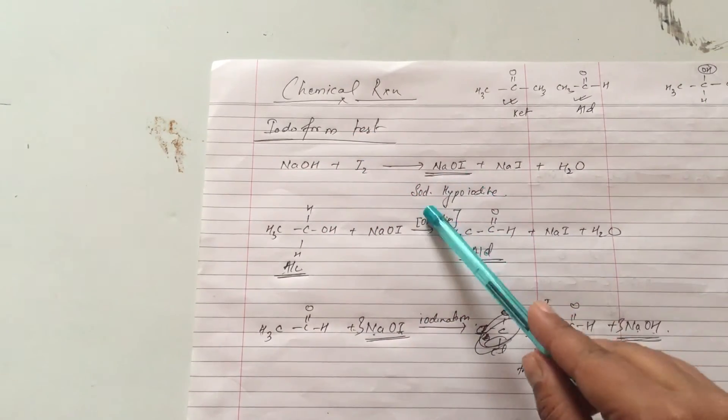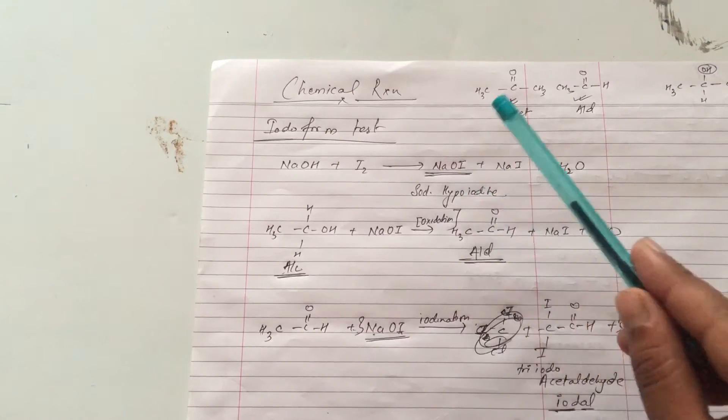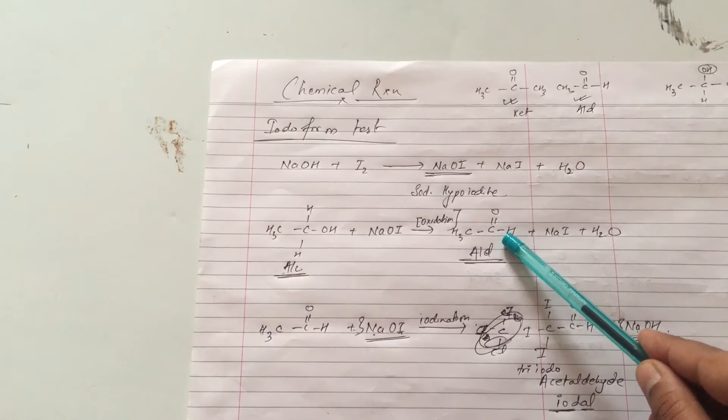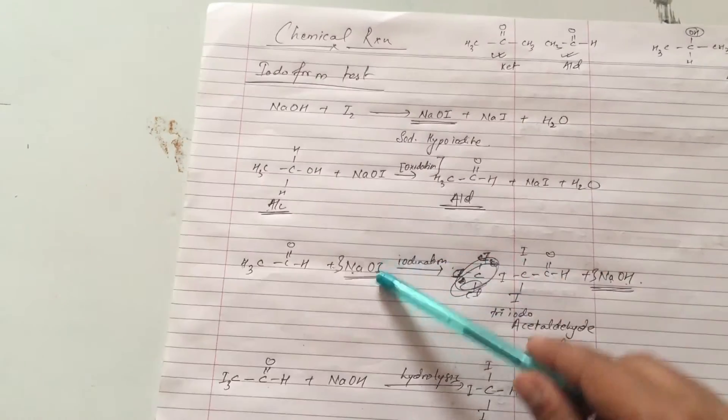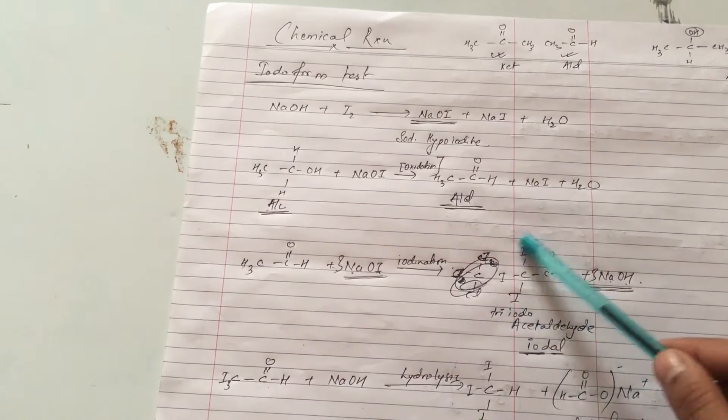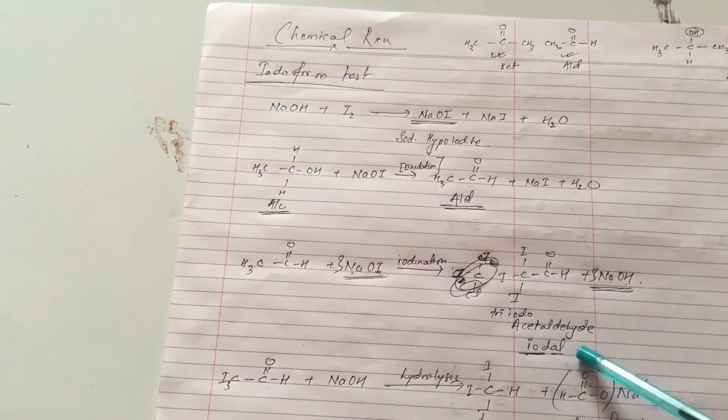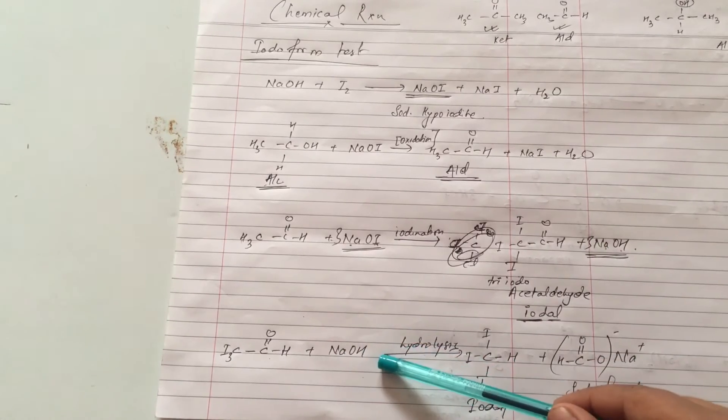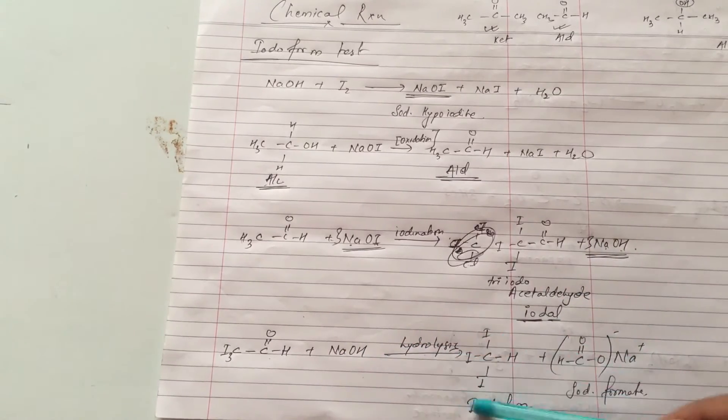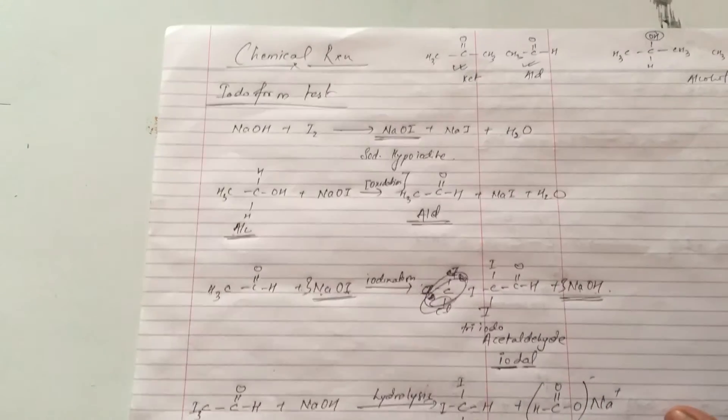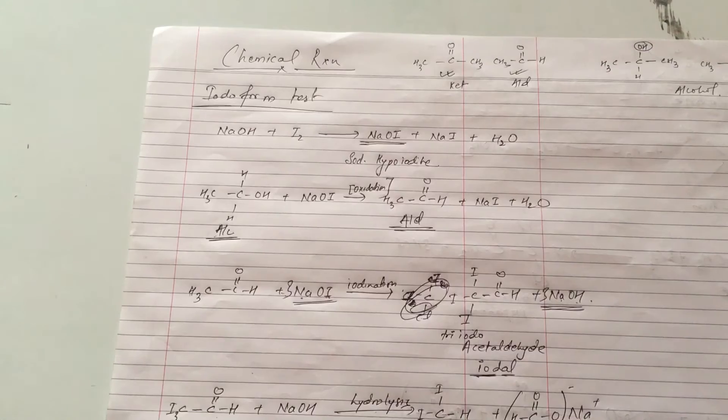Then ethanol is treated. Aldehyde forms. With iodine and NaOH the iodoform reaction occurs. Triiodoacetaldehyde forms. The triiodoacetaldehyde with NaOH treated ultimately gives iodoform. So iodoform reaction, those compounds which give positive iodoform test.